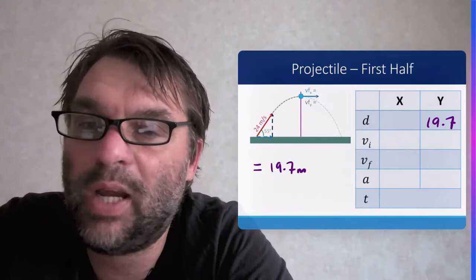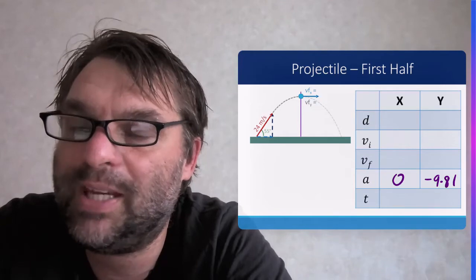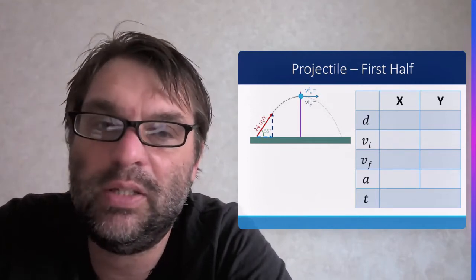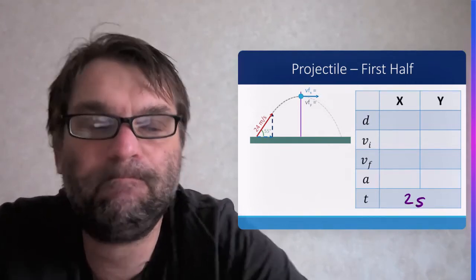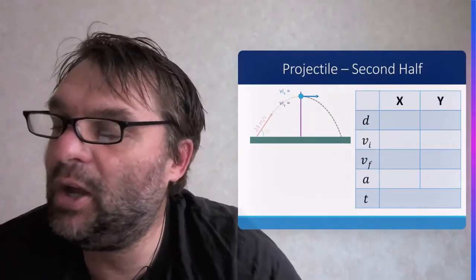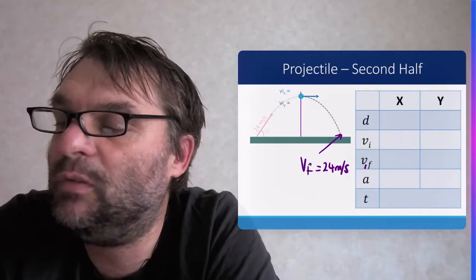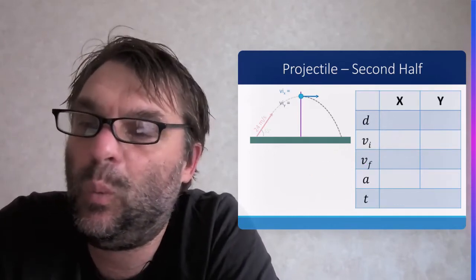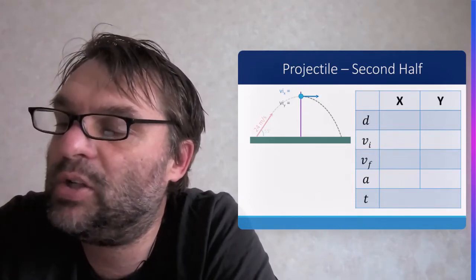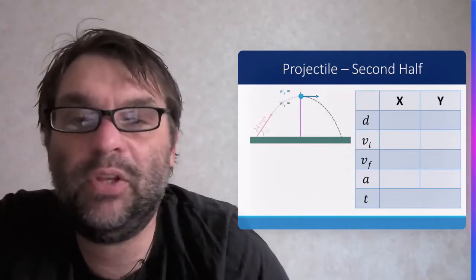The acceleration is zero in X and minus 9.81 m/s² in Y. Using these values you can find t = 2 seconds for the first half. In the second half, it's just as straightforward — basically a doubling up. The initial velocity in Y for the second half is zero, the initial velocity in X is still 13.8 m/s, and t equals 2 seconds again.